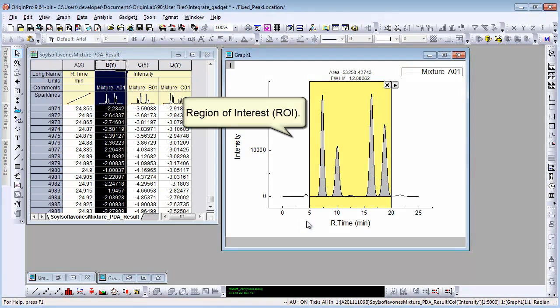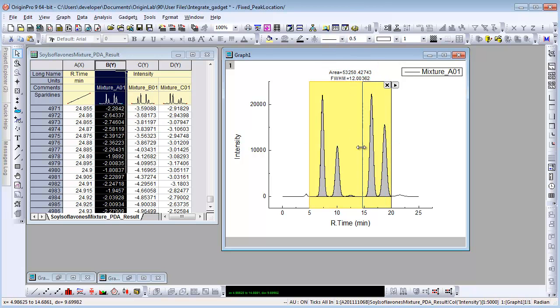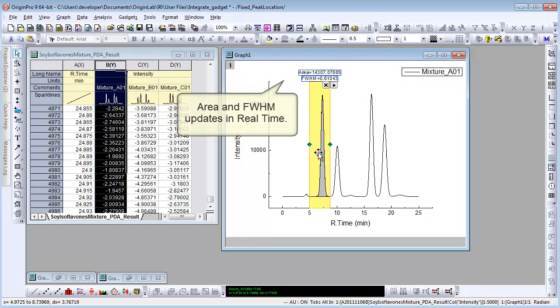Let's click OK directly for now. A yellow rectangle shows, we call it ROI box, region of interest. Area and FWHM of this region shows on the top. When resizing or moving the box, the calculation will update in real-time.